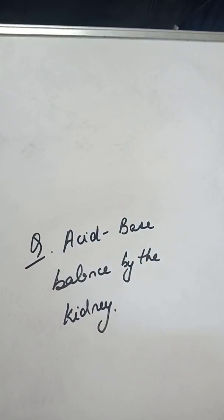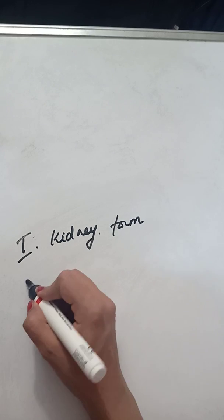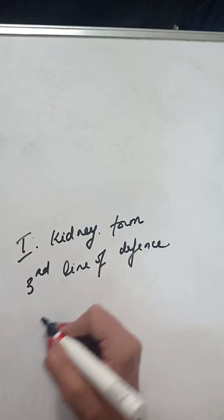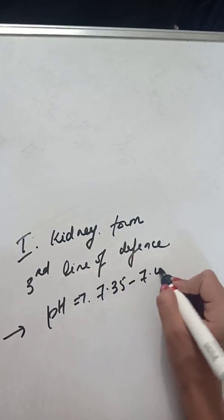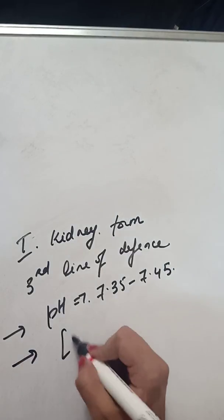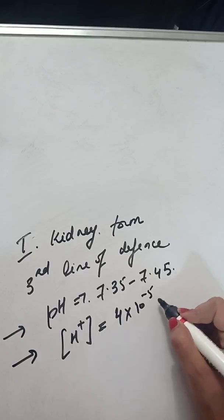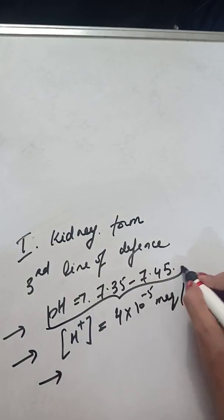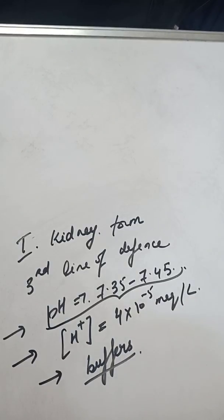The kidneys form the third line of defense for acid-base regulation of the body. The pH of the body is maintained within a narrow range of 7.35 to 7.45. The hydrogen ion concentration in the body fluids is nearly 4 × 10⁻⁵ milliequivalents per liter. The kidney maintains this narrow pH range with the help of various buffers present in the tubule.